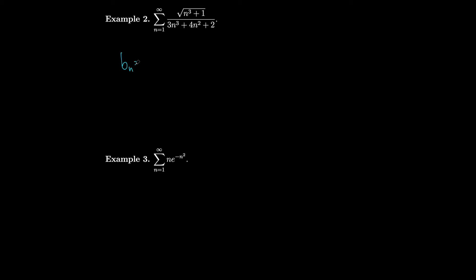We can let b_n equal the cube root of n³ over 3n³ by just looking at our dominant terms and we get n^(3/2) over 3n³ which is the same as 1/(3n^(3/2)). So using the limit comparison test and taking this thing and dividing by this thing looks like we should be good. So looking at the candidate for b_n we see that we should use the limit comparison test.